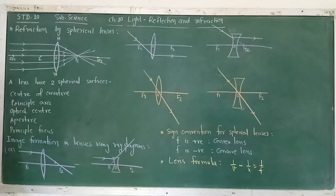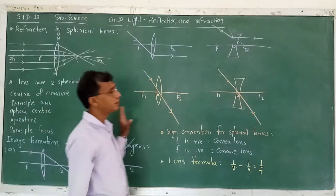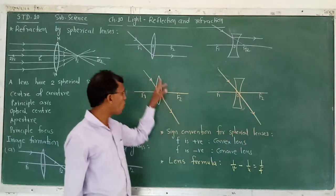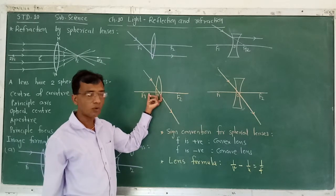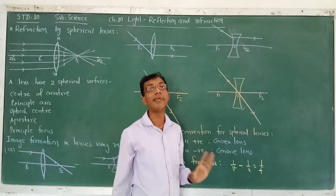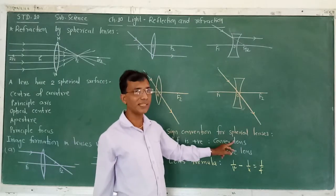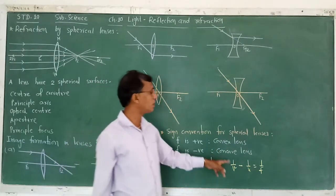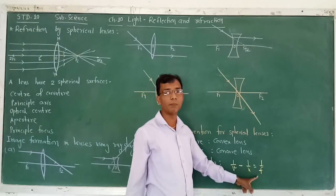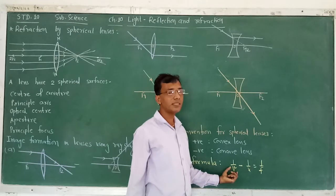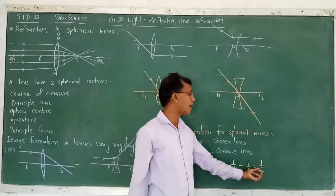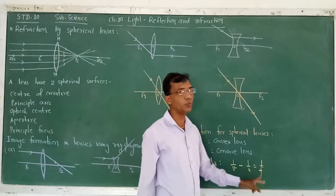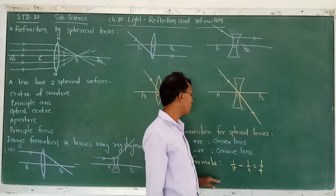Sign convention for spherical lenses: the focal length F is positive for a convex lens and negative for a concave lens. The lens formula is: 1/v − 1/u = 1/f, where v is the image distance, u is the object distance, and f is the focal length.